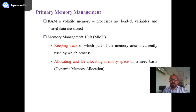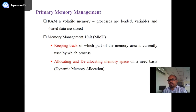Primary memory management refers to RAM — volatile memory. It keeps track of which part of the memory area is currently in use, and handles allocating and de-allocating memory on a need basis.